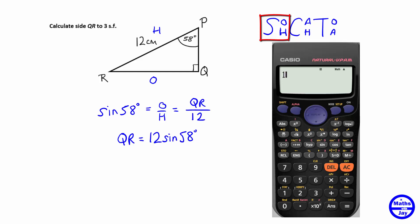So we've got 12 sine 58 now you can see there's an open bracket there so strictly speaking you should put the closed bracket in but if all we're doing is just finding 12 sine 58 we can just do equals.